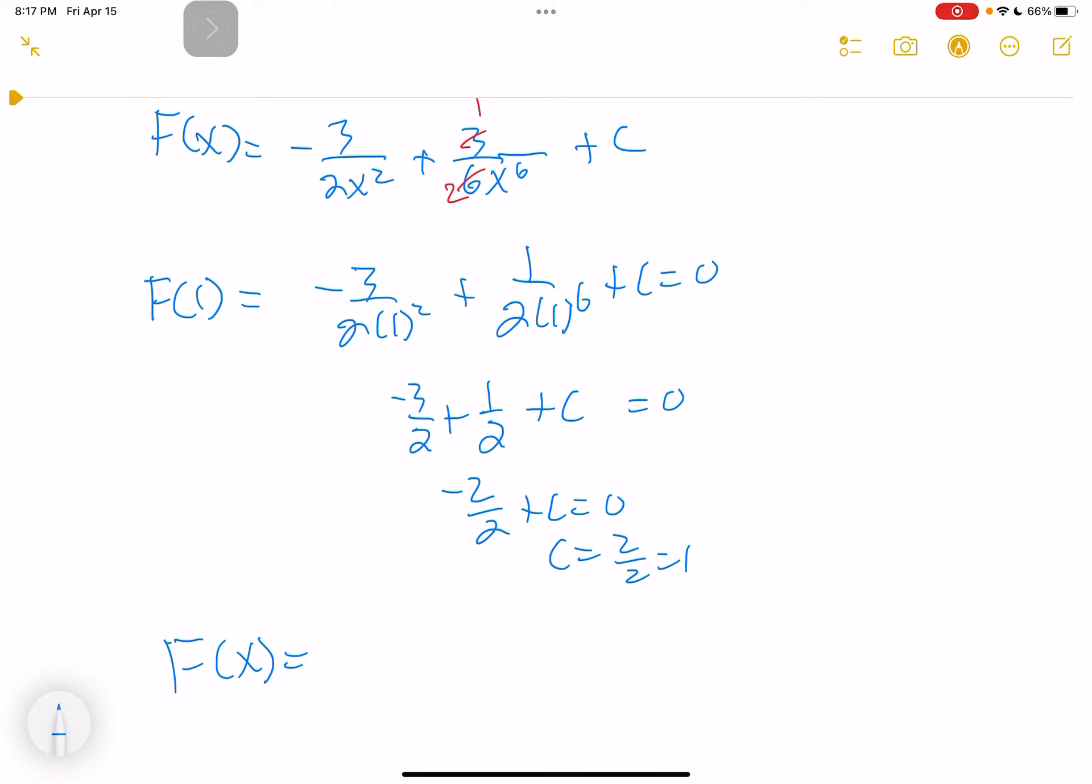So our capital F(x), the antiderivative function, is negative 3 over 2x squared plus 1 over 2x to the sixth plus 1. That's it.